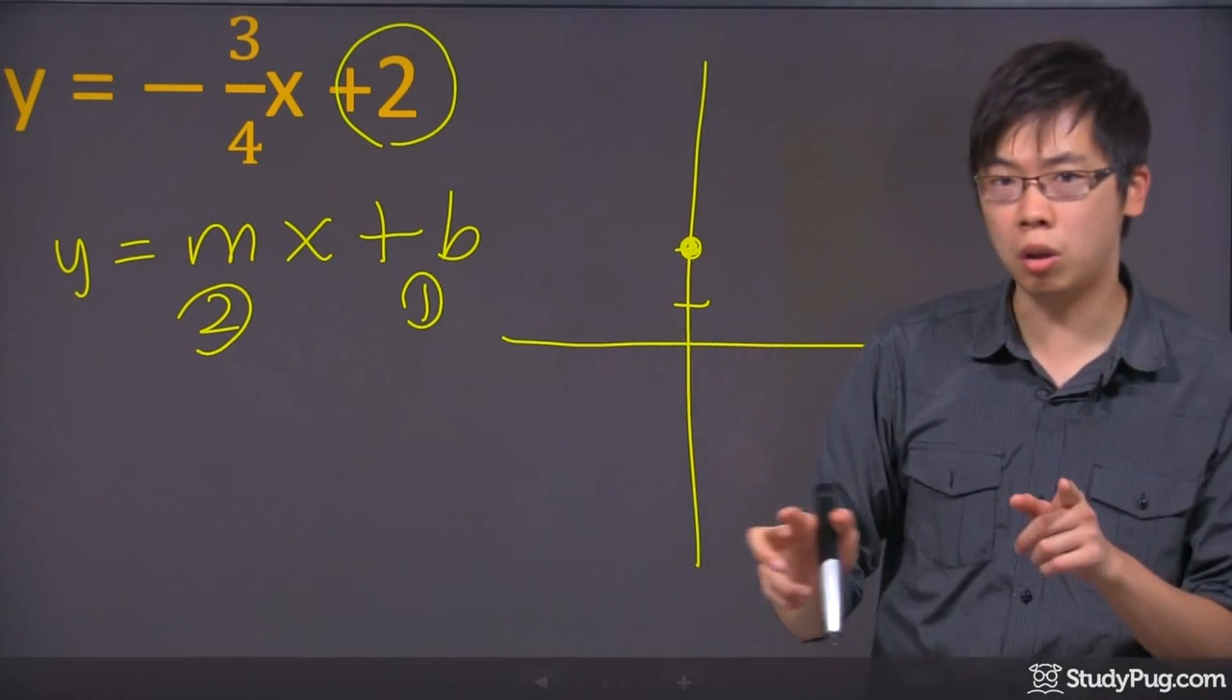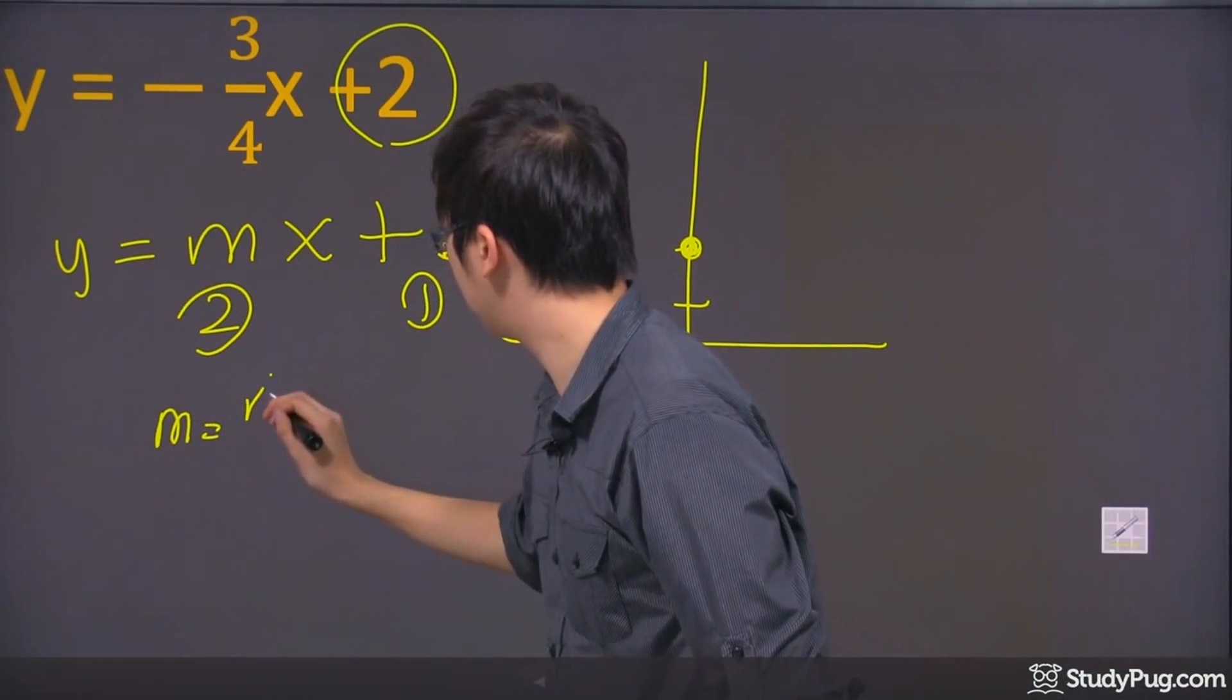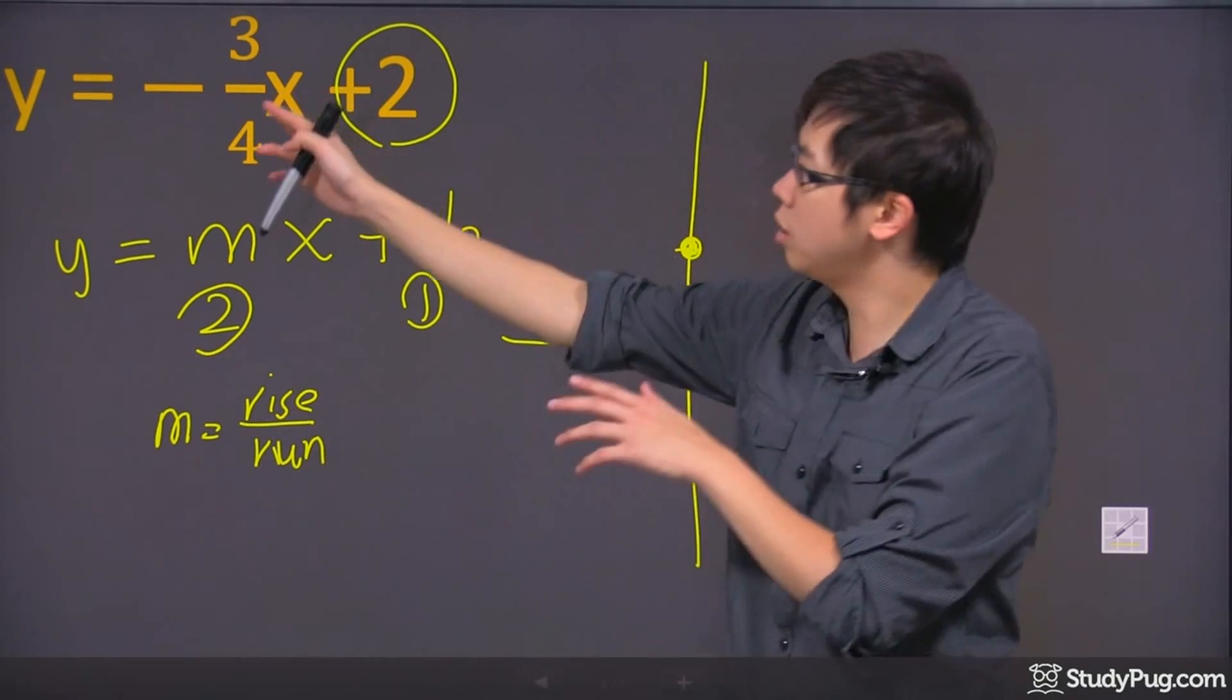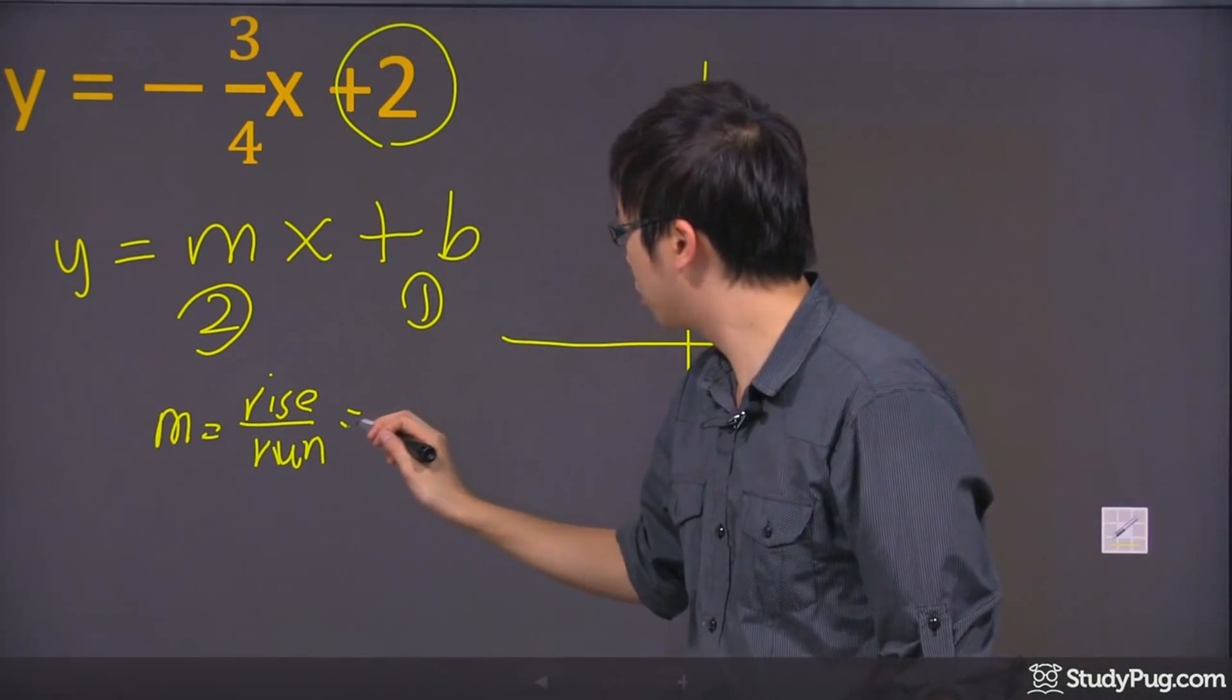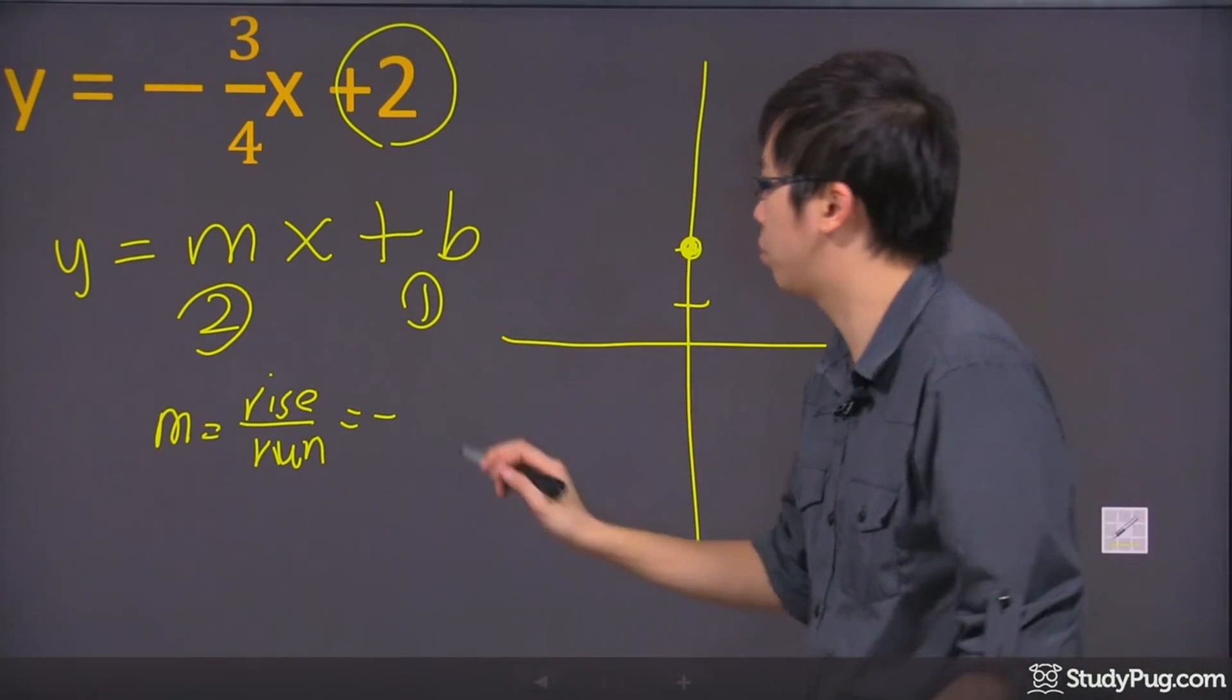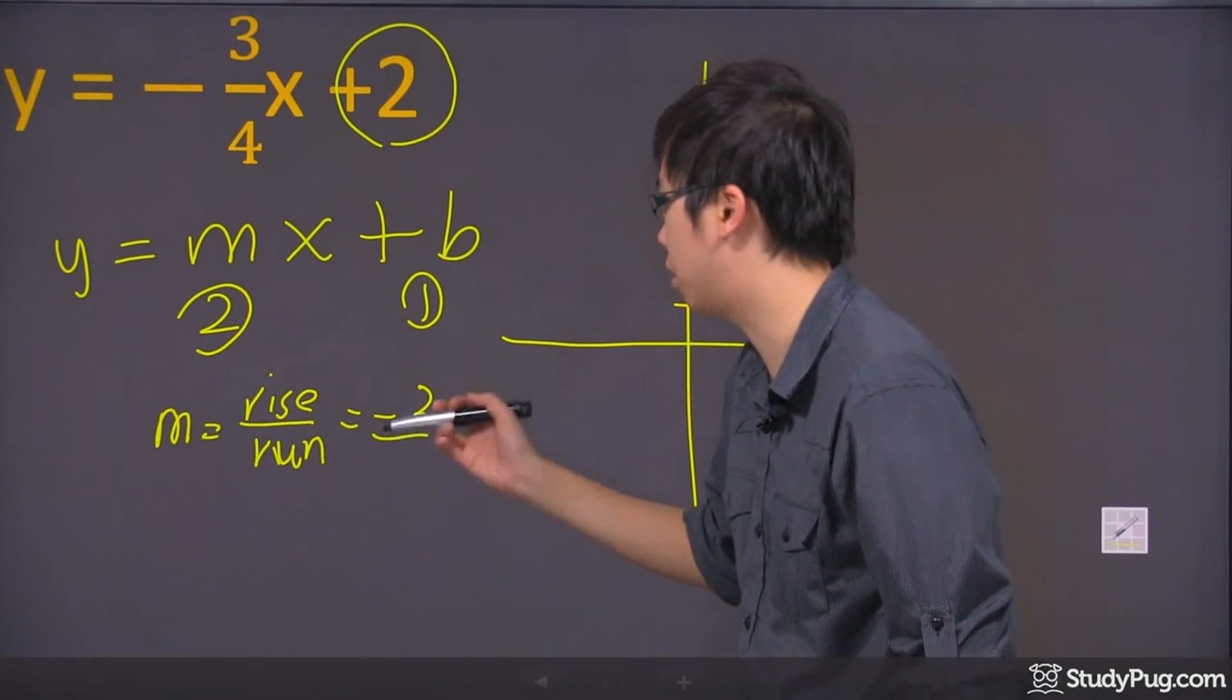Now remember, the slope is actually just the rise over run. So if you look at the negative 3 over 4, the negative sign can be assigned to the top or the bottom. Now I personally prefer to put it on the top because it's just easier for me.